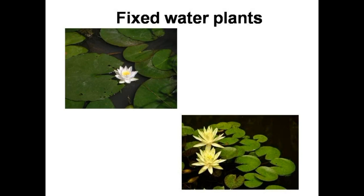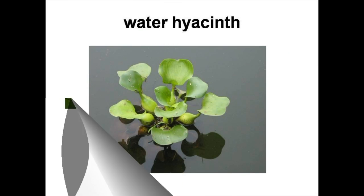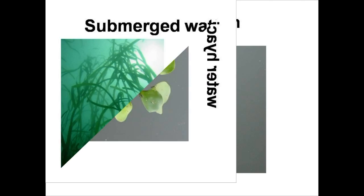The roots of other aquatic plants are not fixed in mud, so they can flow away with water. Like this plant — its stem is filled with air so it can float easily. This kind of plant is called a floating plant.